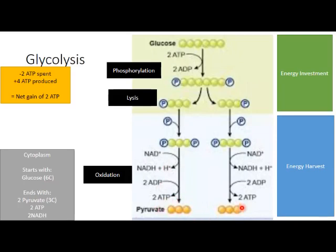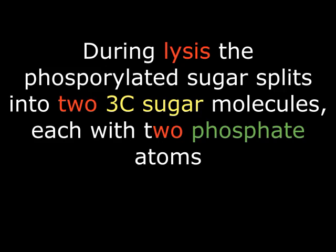The second step of glycolysis is lysis — where the phosphorylated glucose molecule breaks down into two molecules. The phosphorylated glucose splits, giving us two molecules each with three carbon atoms, with phosphate groups attached on each side. The process of breaking down the phosphorylated sugar into two molecules is what we are calling lysis. At this step, we are not seeing any expenditure or harvest of energy.